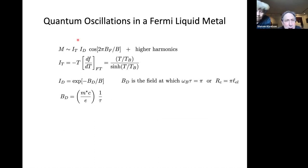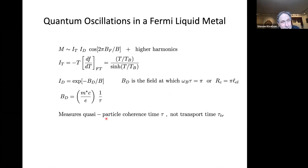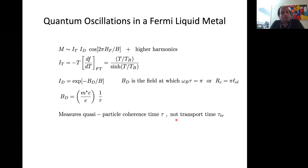There is also a so-called Dingle factor, which is exponential in one over B, where the Dingle magnetic field B_D equals the effective mass times one over the quasiparticle lifetime. You can think of B_D as the magnetic field at which the cyclotron frequency times the quasiparticle lifetime equals pi, or where the cyclotron radius equals pi times the elastic mean free path. This factor directly measures the quasiparticle coherence time tau — it's not a transport time, it's not anything collective. It's really directly a property of the quasiparticle.